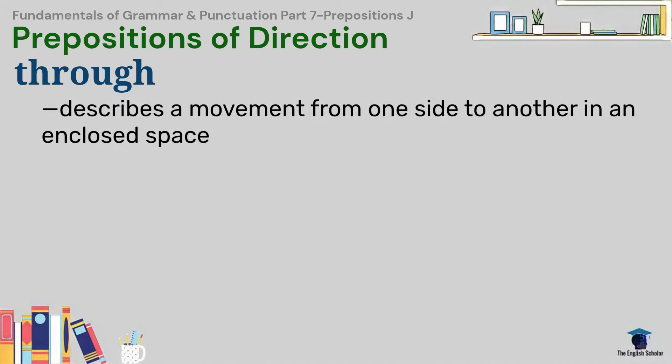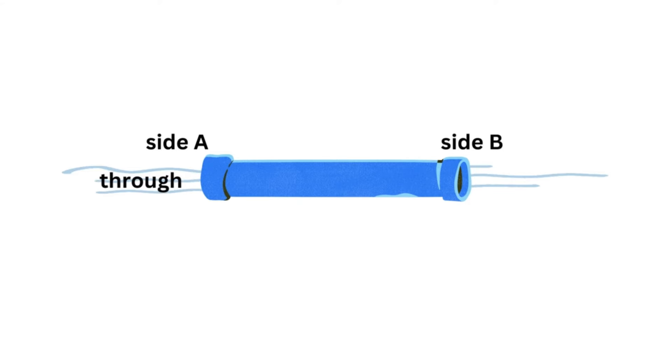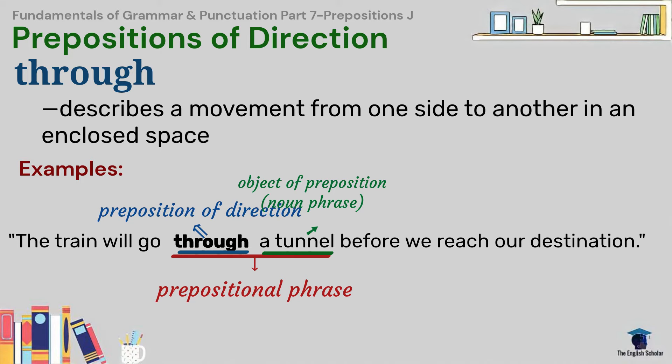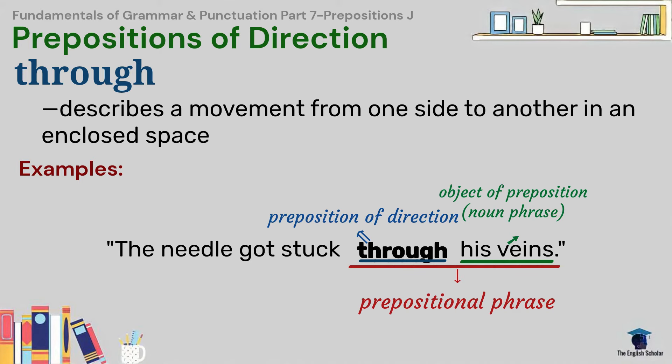Through describes a movement from one side to another in an enclosed space. For example, the train will go through a tunnel before we reach our destination. The needle got stuck through his veins.